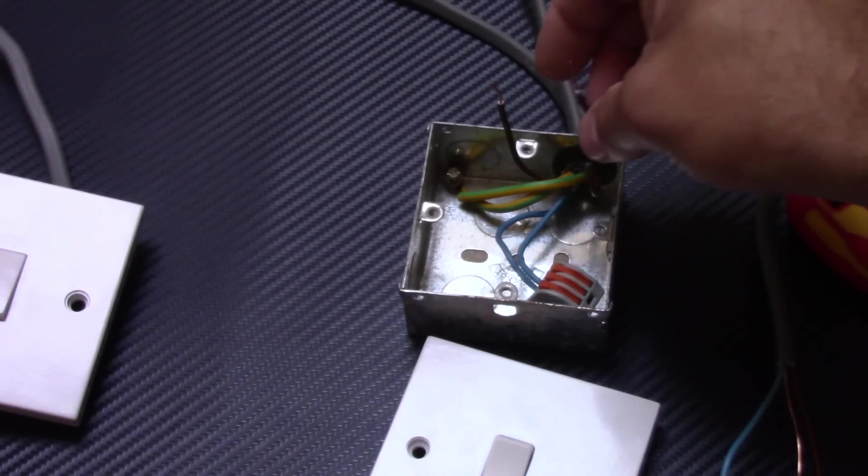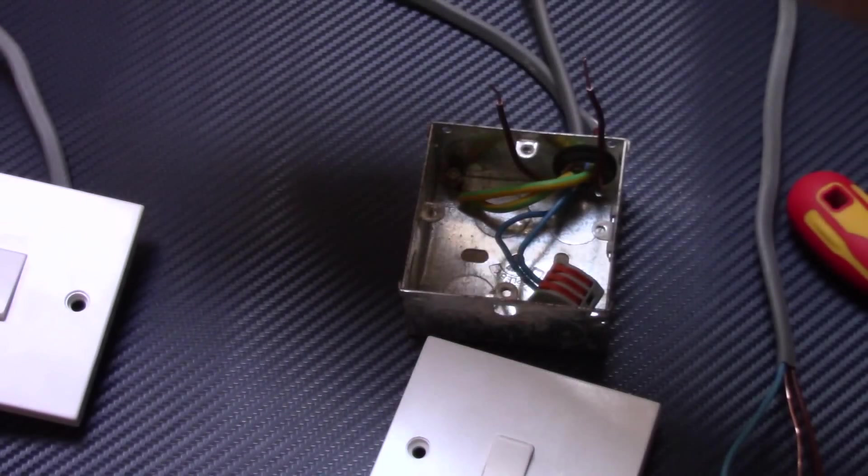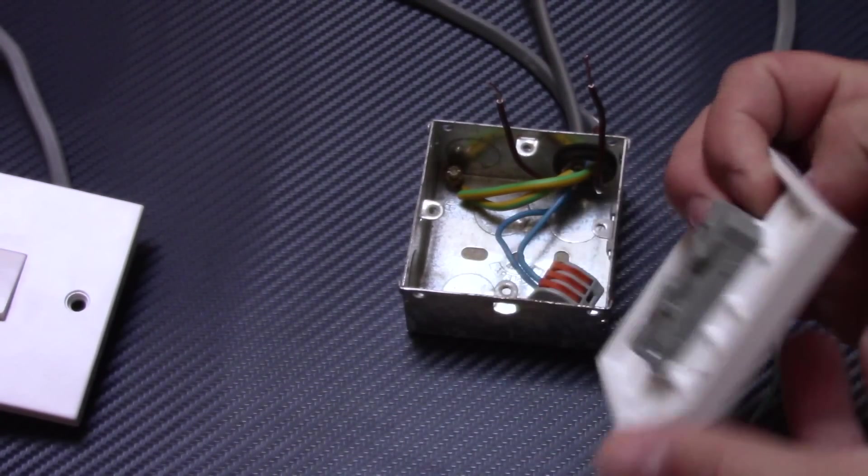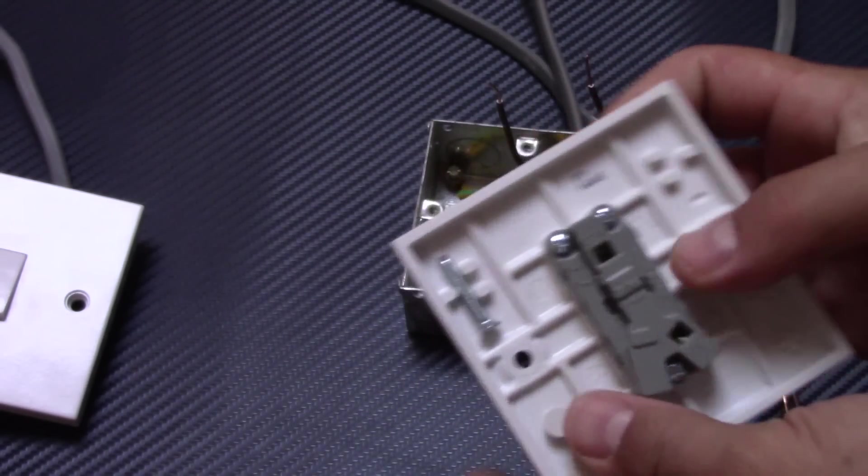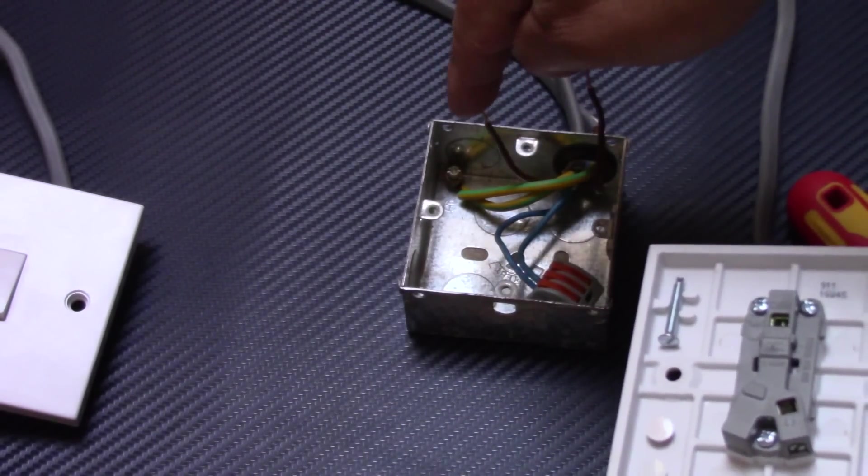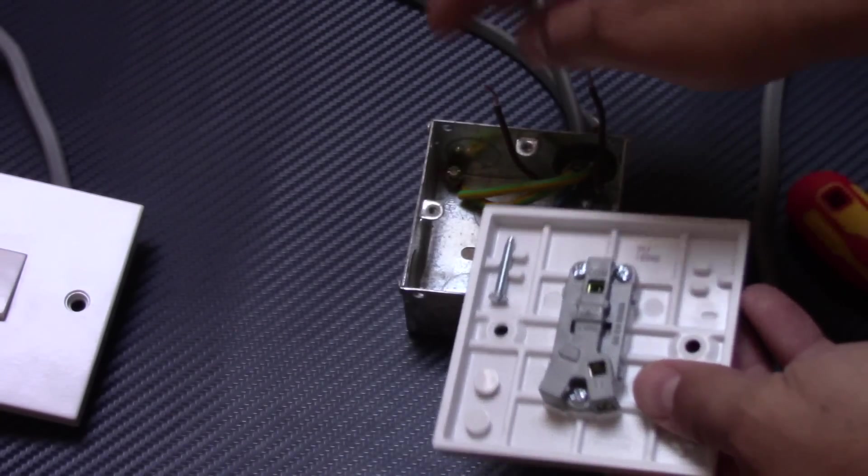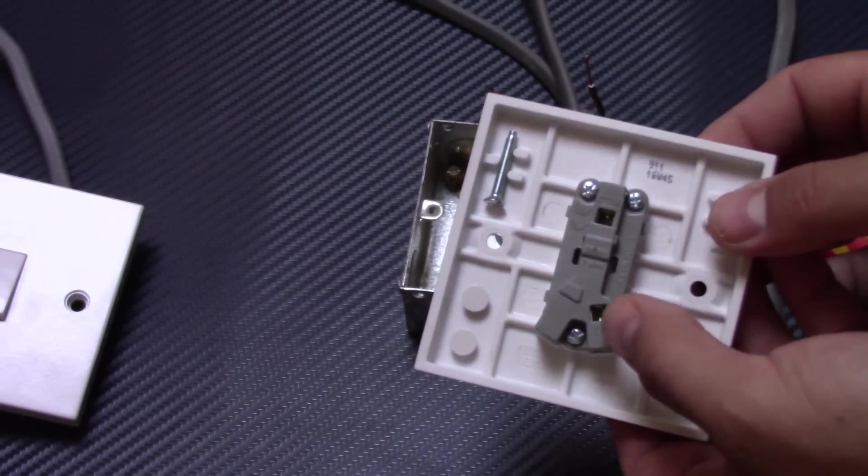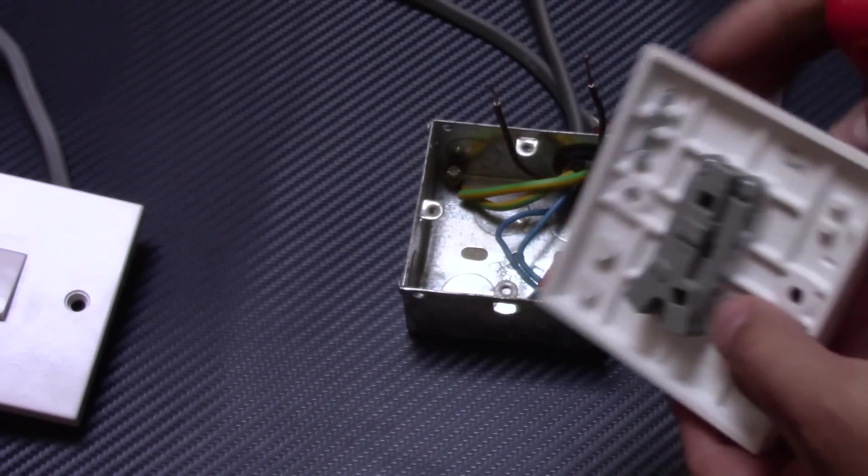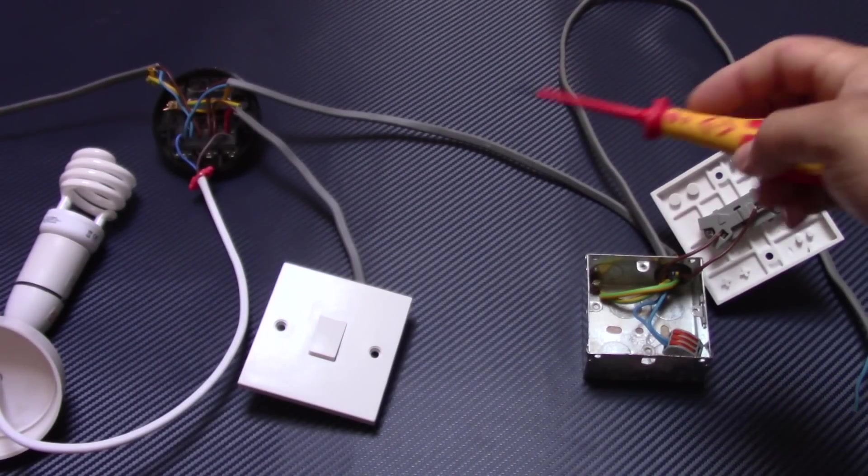And now we've got just these two wires, permanent live from the last ceiling rose. So we need to connect it to the comm terminal in one-way switch, and then the switch live which goes to our downlights we connect to the L1 terminal. So here's permanent live, here's the switch live.